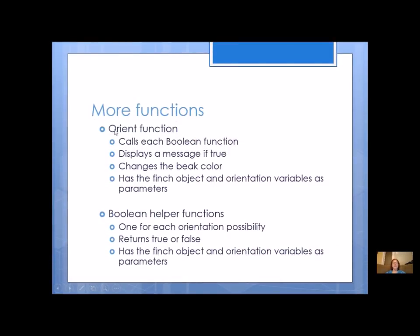The orient function is just going to call boolean helper functions — that's all it's going to do. It's going to display a message if something is true, change the bead color, and use the Finch object and at least one orientation variable as parameters. The boolean helper functions will have one for each orientation possibility — beak up, beak down, wing up, wing down — each returning true or false, with the Finch and orientation variables as parameters.